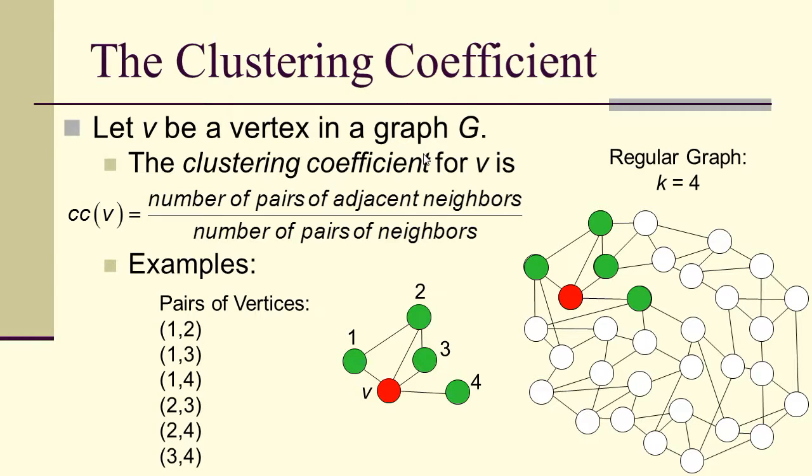But the actual adjacencies: 1's adjacent to 2, and 2's adjacent to 3. So of the 6, only 2 actually occur in the neighborhood of v. So the clustering coefficient of v is 2 over 6, or a third.